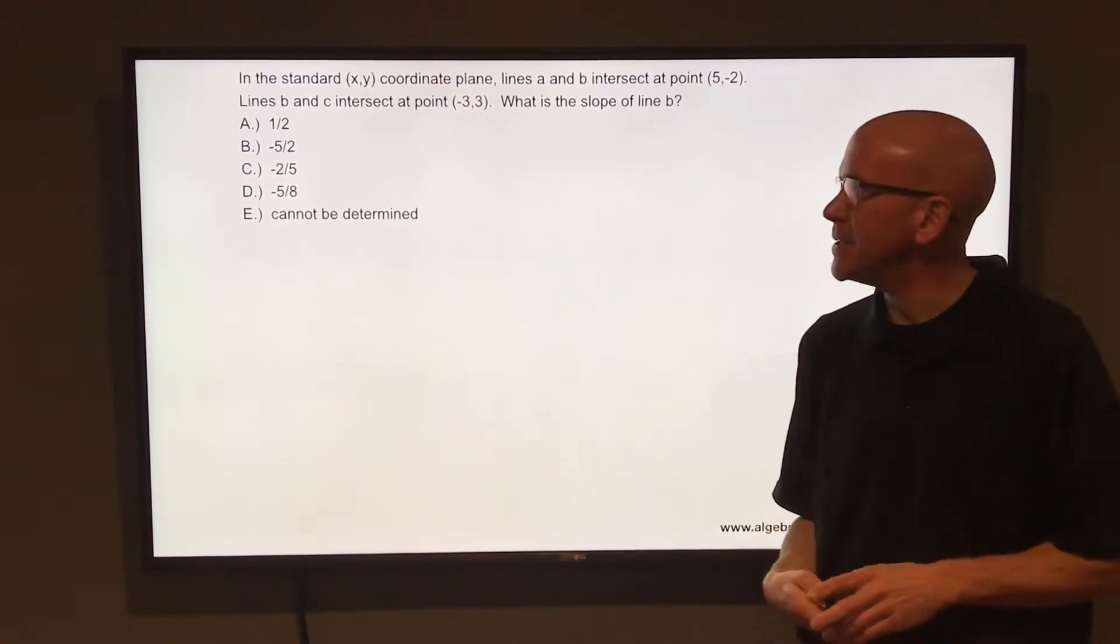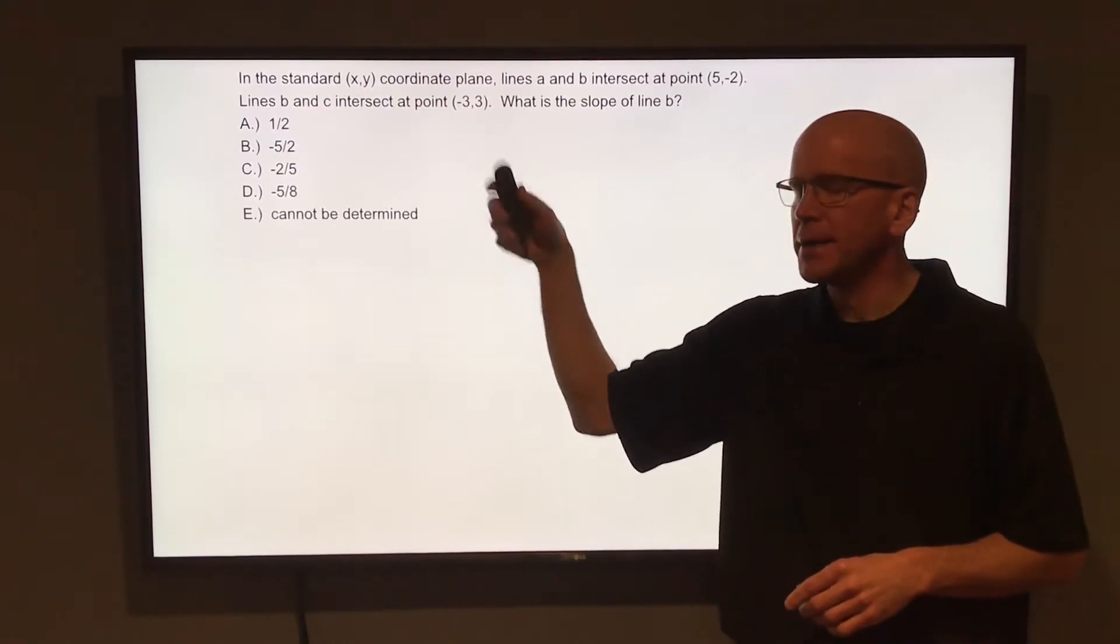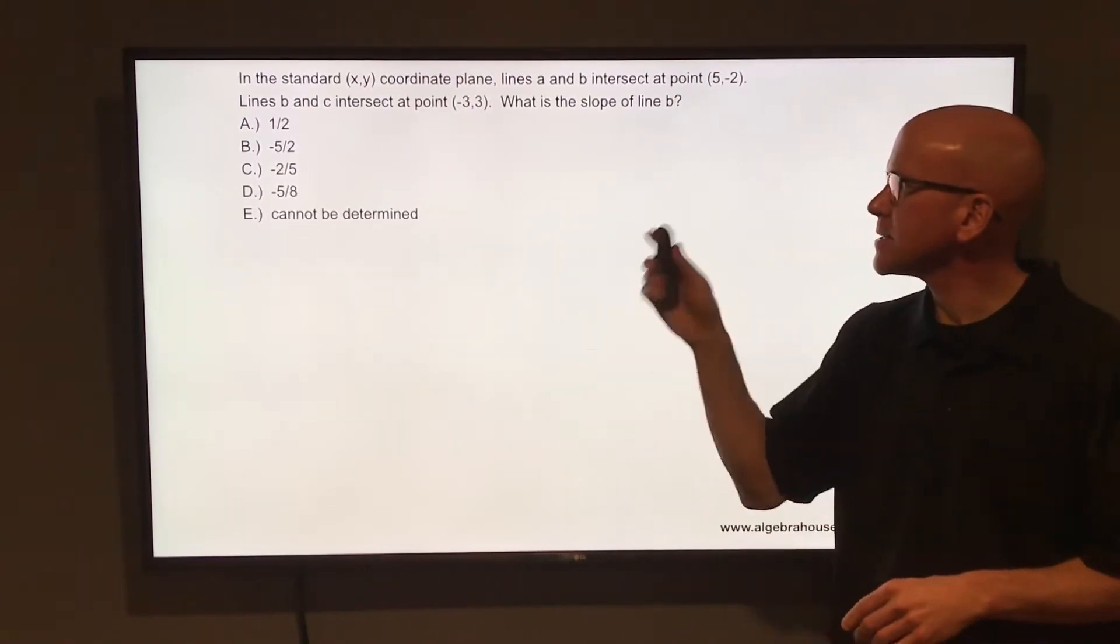In the standard x-y coordinate plane, lines A and B intersect at point (5, -2). Lines B and C intersect at point (-3, 3). What is the slope of line B?